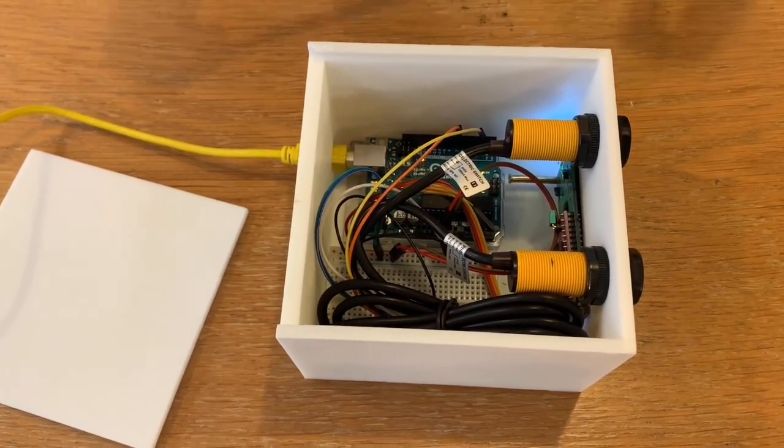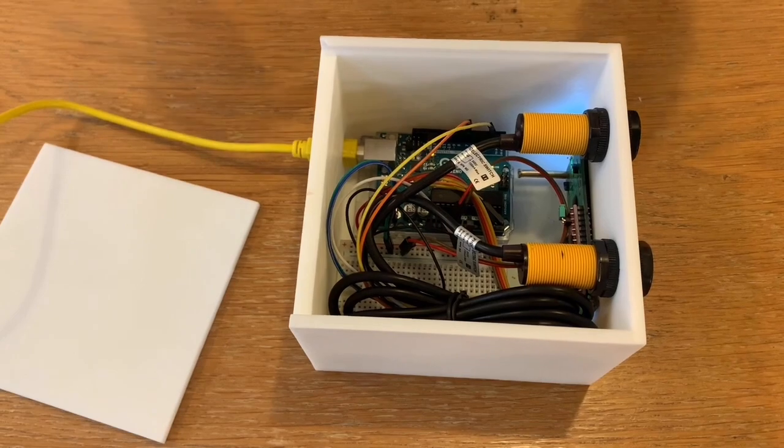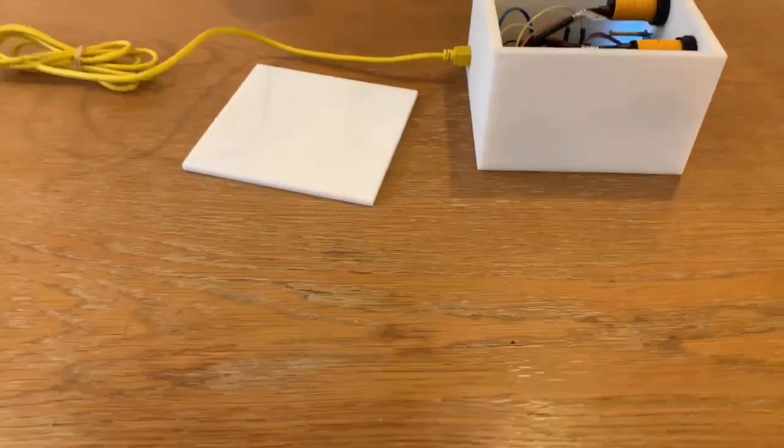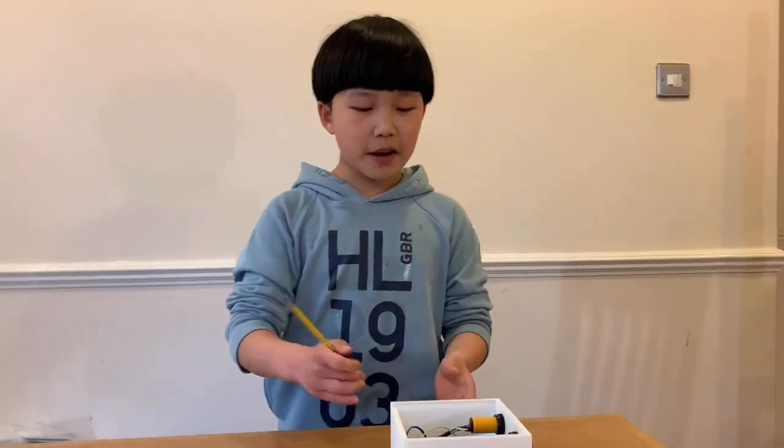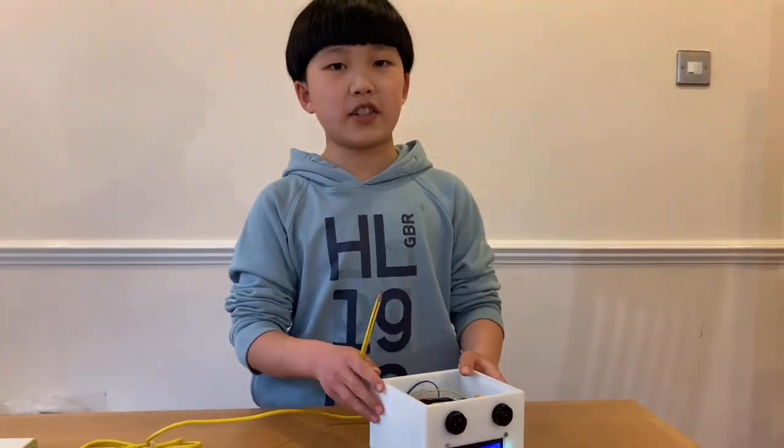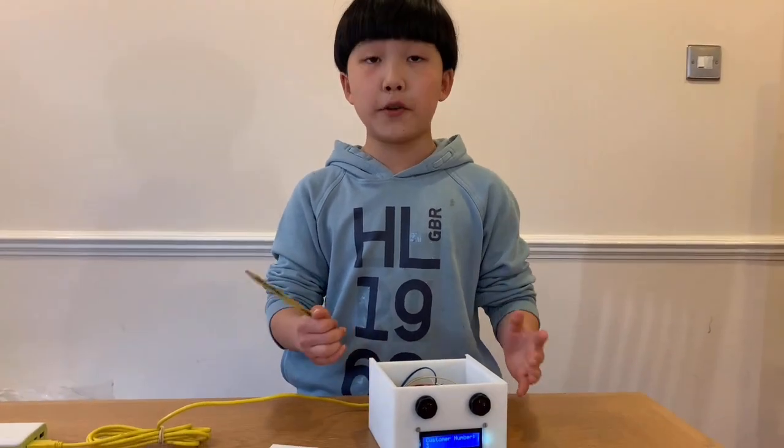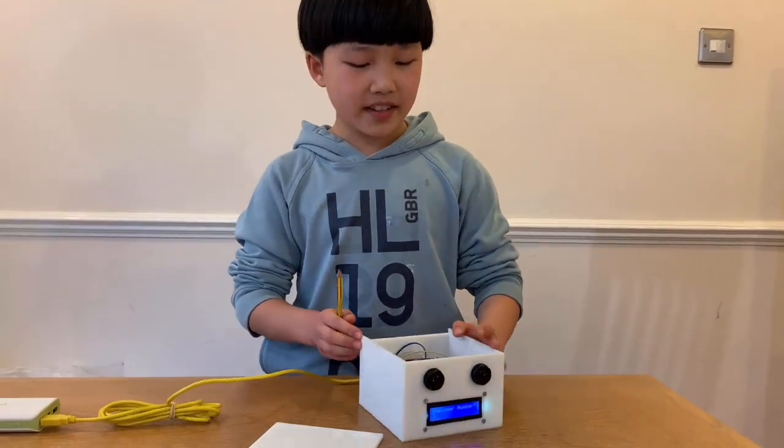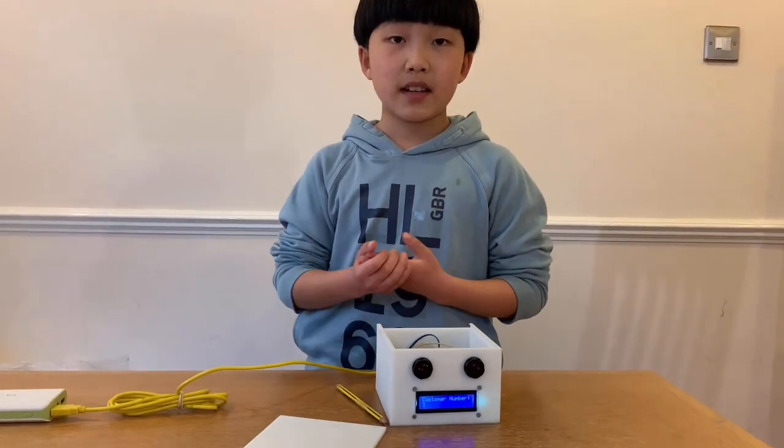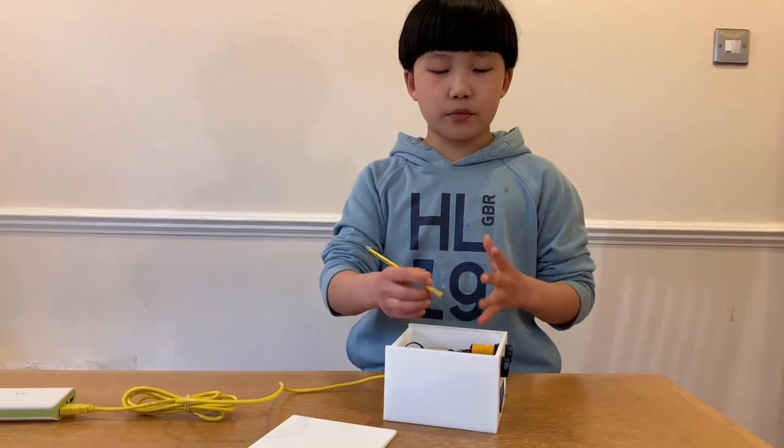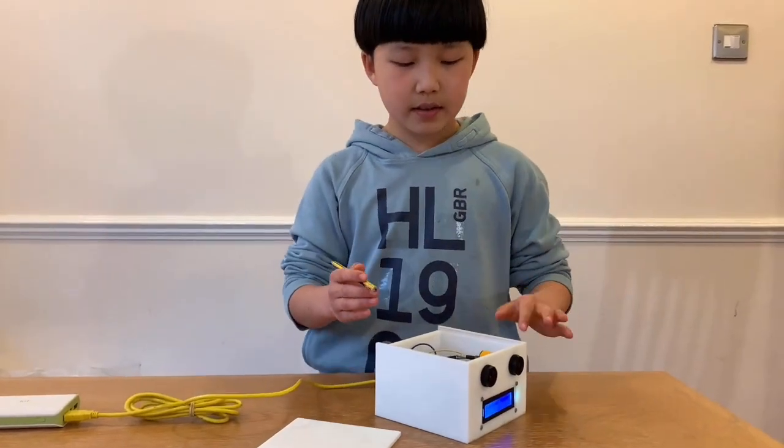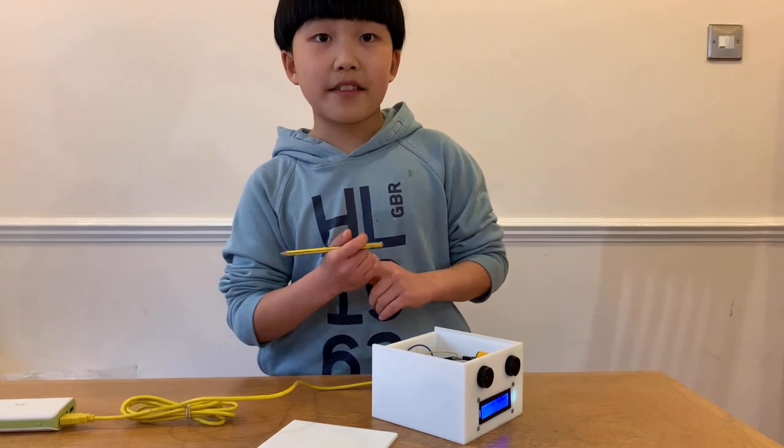There are two main functions which is void setup and void loop. Void setup tells this whole thing what it should do, everything that it should do before all the action happens, like detecting things. In this case we told it to write Jasonics customer counter. It just does that and resetting everything is what the setup tells it to do. Then we move on to the loop.